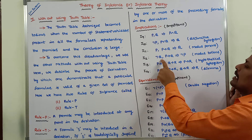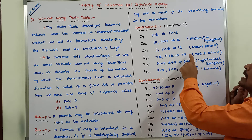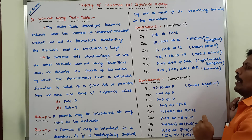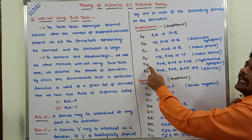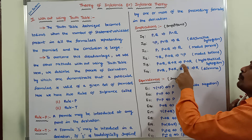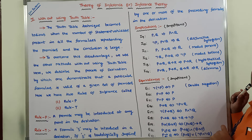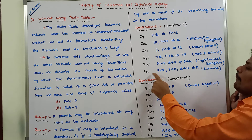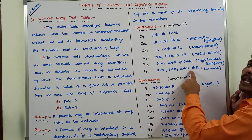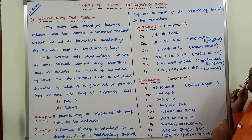I12: negation Q and P conditional Q implies negation P. This is also called Modus Tollens. I13: P conditional Q and Q conditional R implies P conditional R. This is called Hypothetical Syllogism. I14: P or Q, and P conditional R, and Q conditional R implies R. This is called Dilemma.